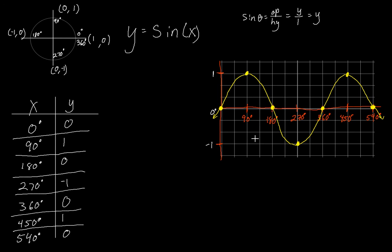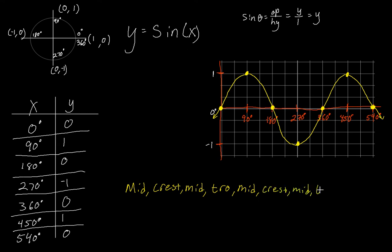Here is our very basic parent function for sine. The midline of this graph is on the x axis. If you don't know what midline, crest, or trough means, watch the previous video about wave vocabulary. Starting at zero degrees, sine starts at the midline, then goes up to a crest, back down to the midline, then to the trough, and back to the midline. It continues that pattern in both directions — and going backwards it follows: trough, midline, crest, midline.